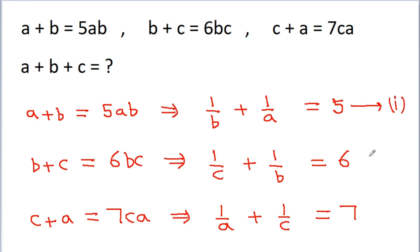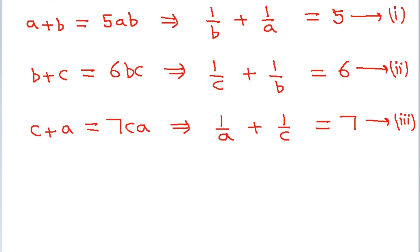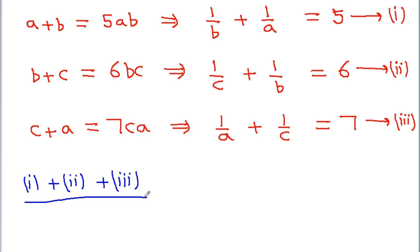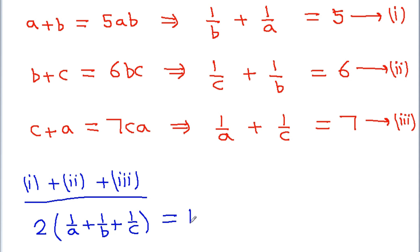Let's call this equation 1, this is equation 2, and this is equation 3. Now if we add these three equations, we get 1 by a appears 2 times, 1 by b appears 2 times, and 1 by c appears 2 times. So we get 2 times (1 by a plus 1 by b plus 1 by c) is equal to 5 plus 6 plus 7, which is 18. So we get 1 by a plus 1 by b plus 1 by c is equal to 9.